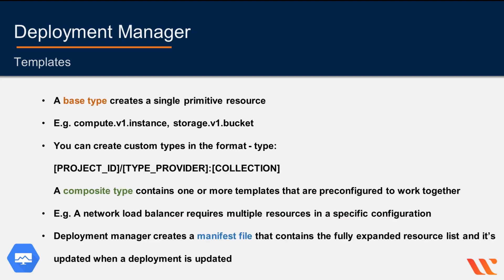A base type creates a single primitive resource. For example, the Google-owned base types include compute.v1.instance, storage.v1.bucket, and sqladmin.v1beta4.database. Base types are supported by an API that supports CRUD — create, read, update, and delete.